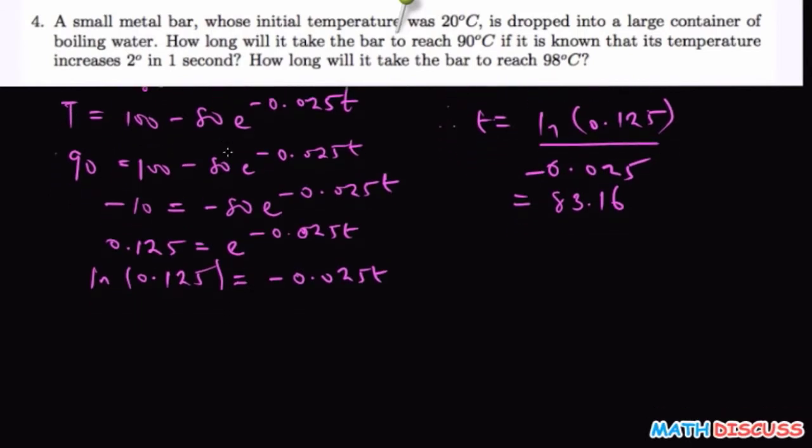So I'm still going to be using 100 minus 80, still using this here. So it says how long will it take - this time around our T is 98. So we have 98 equals 100